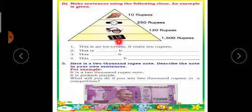When I use, continue sentence. First one they have given the example. First one, ice cream 10 rupees. This is an ice cream, it cost 10 rupees. Like this, second one you have to write.